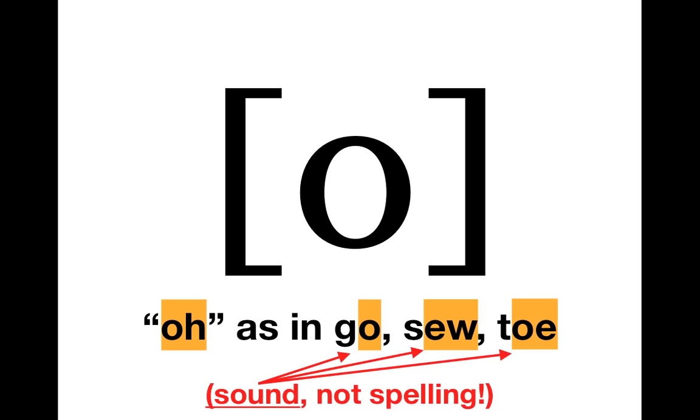Once again, we're focused on the sound, not the spelling. The word so has an E and a W in it, but they together make that O sound. So they're going to be associated with this O symbol even though the letter O isn't in there anywhere.